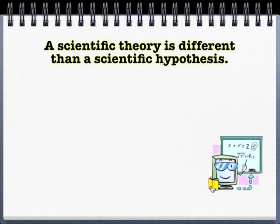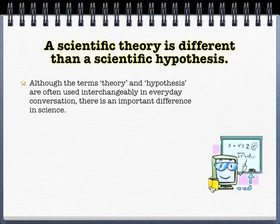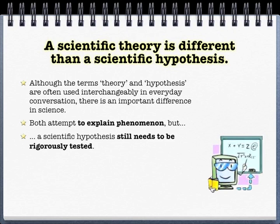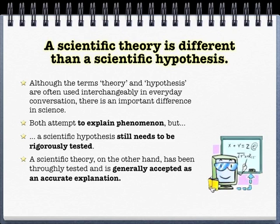Even though theories don't grow up to be laws, hypotheses can grow up to be theories. Some people use these terms interchangeably, but they're not. When you first start something, you should really say 'I have a hypothesis,' because a hypothesis still needs to be tested. And once it's tested and held up, then it becomes a theory. A theory is essentially a hypothesis that's been able to withstand experimentation.